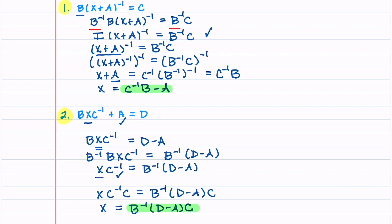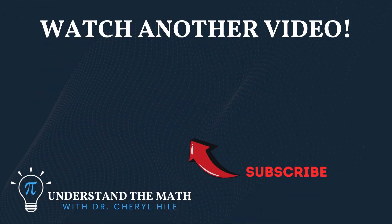And that's our final answer. I think the biggest thing to remember when you solve matrix equations is to make sure that the way you multiply on the left is the same way that you multiply on the right. Be sure to check out the next video in this series where we'll learn all about the Invertible Matrix Theorem. If this video has been helpful to you, please consider subscribing to my channel. Keep believing in yourself, and have a great rest of your day.